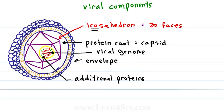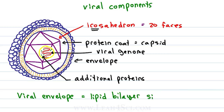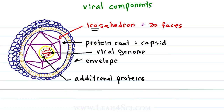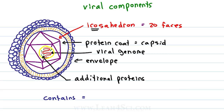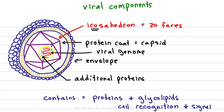Finally, we have the viral envelope, which is seen on many viruses that infect humans and animals. This is a lipid bilayer around the protein coat, very similar to what you'll see in a cell membrane or membrane organelles inside the cell. In fact, these membranes are made from the cells that the virus infects. What's important about the viral envelope is that it may contain proteins and glycolipids — carbohydrates attached to the membrane — that participate in cell signaling and allow these viruses to identify and attach to the cells they're going to infect.